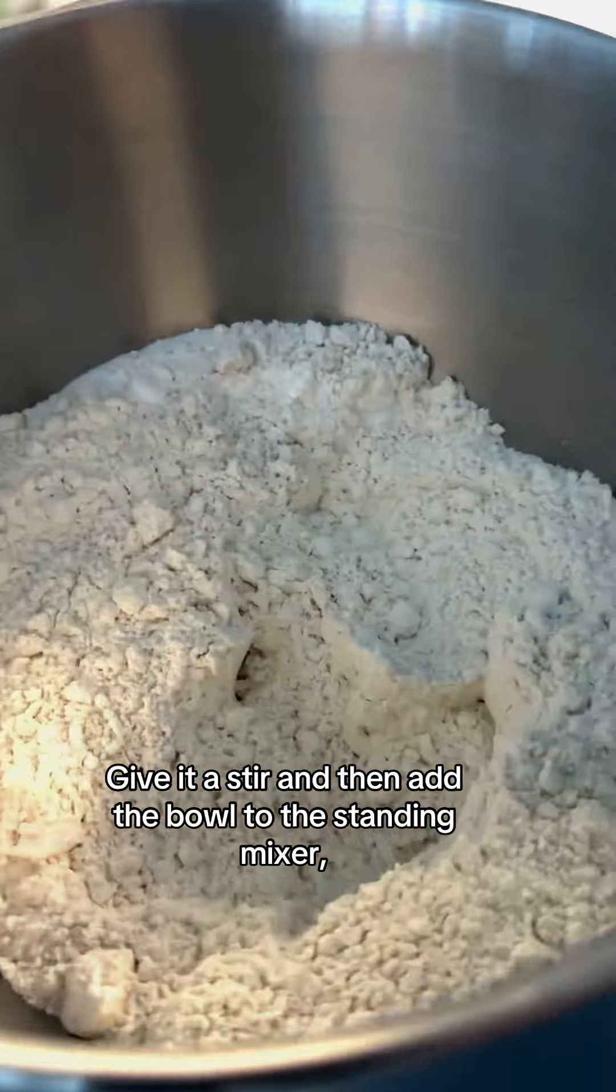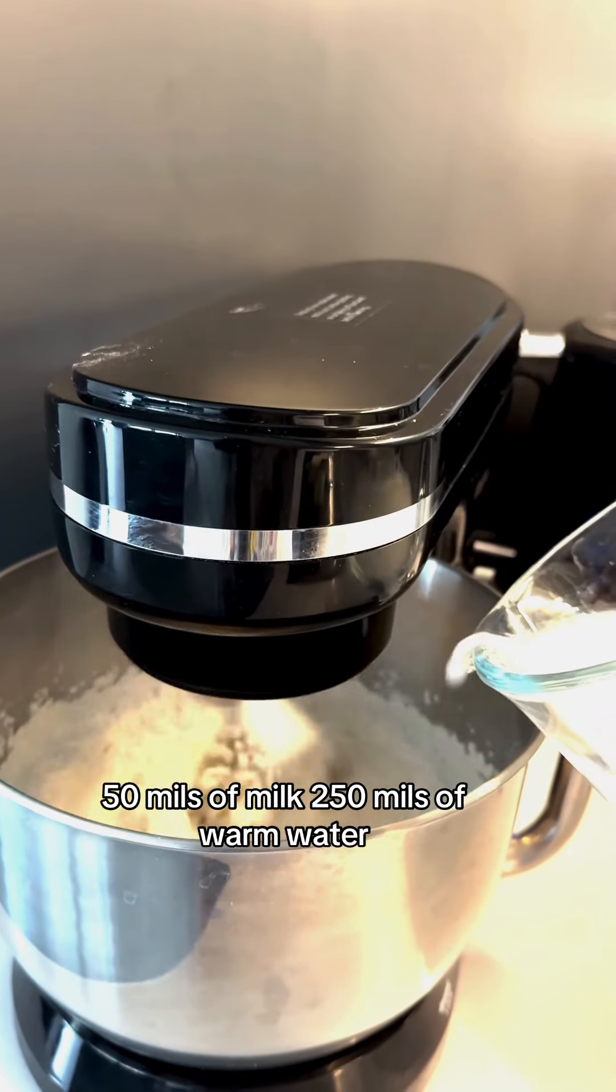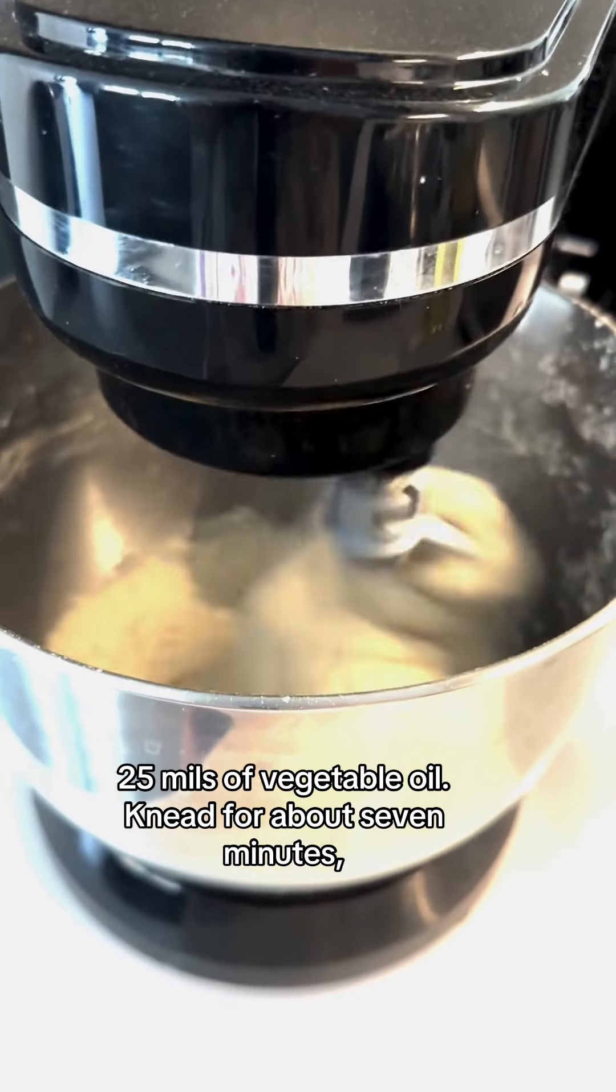Give this a stir and then add the bowl into the standing mixer, add the kneading hook and then we add our liquids: 50 mils of milk, 250 mils of warm water, 25 milliliters of vegetable oil and then knead for about seven minutes.